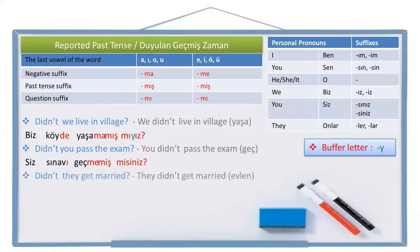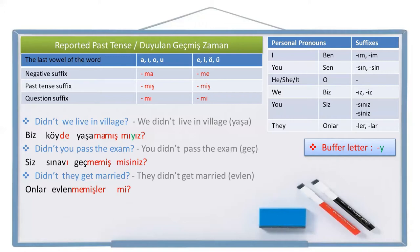And the last example. Didn't they get married? The negative sentence is: they didn't get married. Get married is 'evlen' in Turkish. They is 'onlar', get married is 'evlen', not get married is 'evlenme', didn't get married is 'evlenmemiş'. Be careful: for 'they', at this point we write the person pronoun suffix 'ler', and after that we write the question suffix 'mi'. Onlar evlenmemişler mi? Didn't they get married?